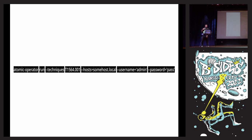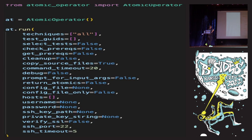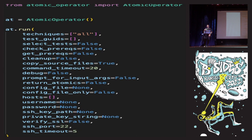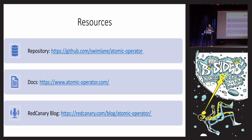This is how you use it in your own script — all the defaults are listed and it's documented on the website. You can run techniques, select tests, run prerequisites, run cleanup commands, and a whole bunch of other stuff. The basics are just run a command and provide that host and it'll run it remotely. The repository is at github.com slash runlane slash atomic-operator, or atomic-operator.com. I also did a Red Canary blog post that walks through the entire process.